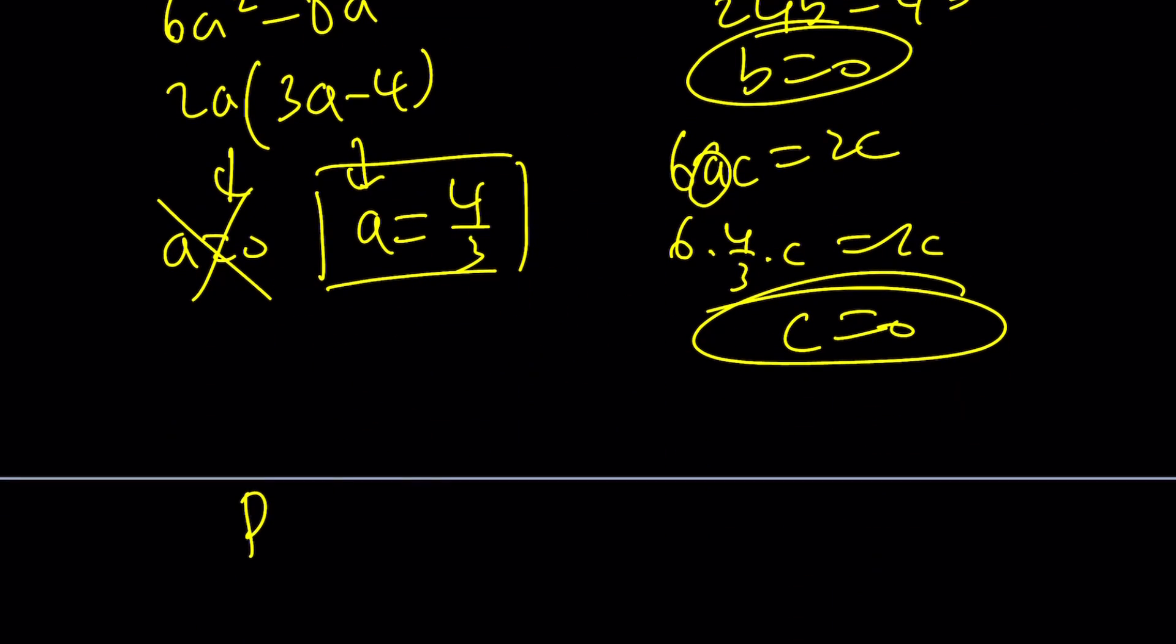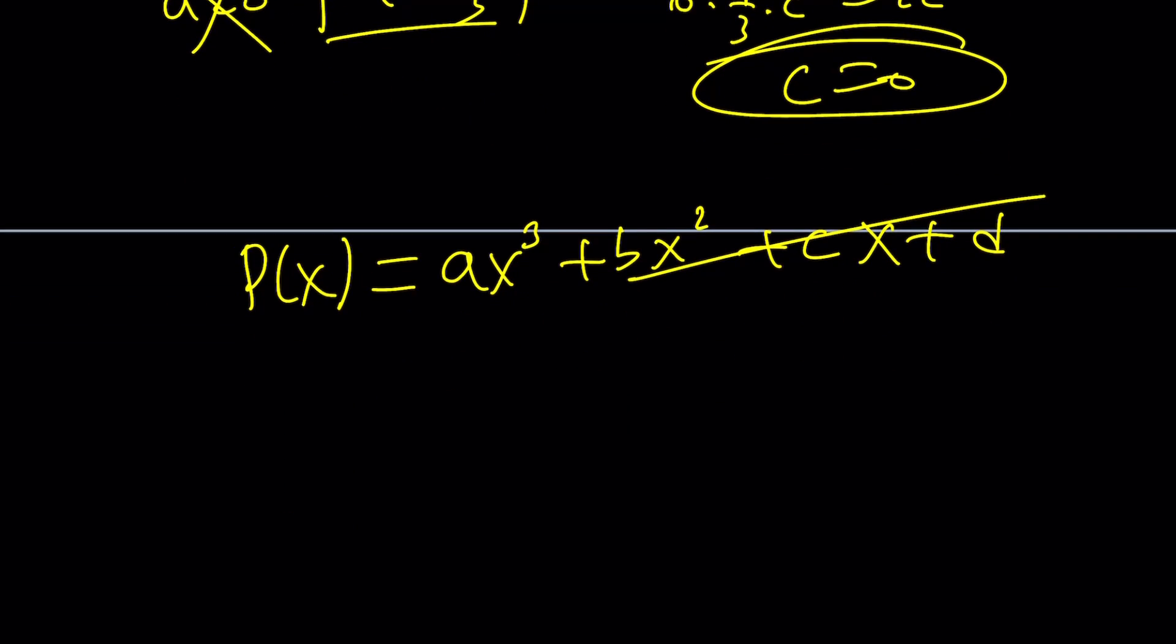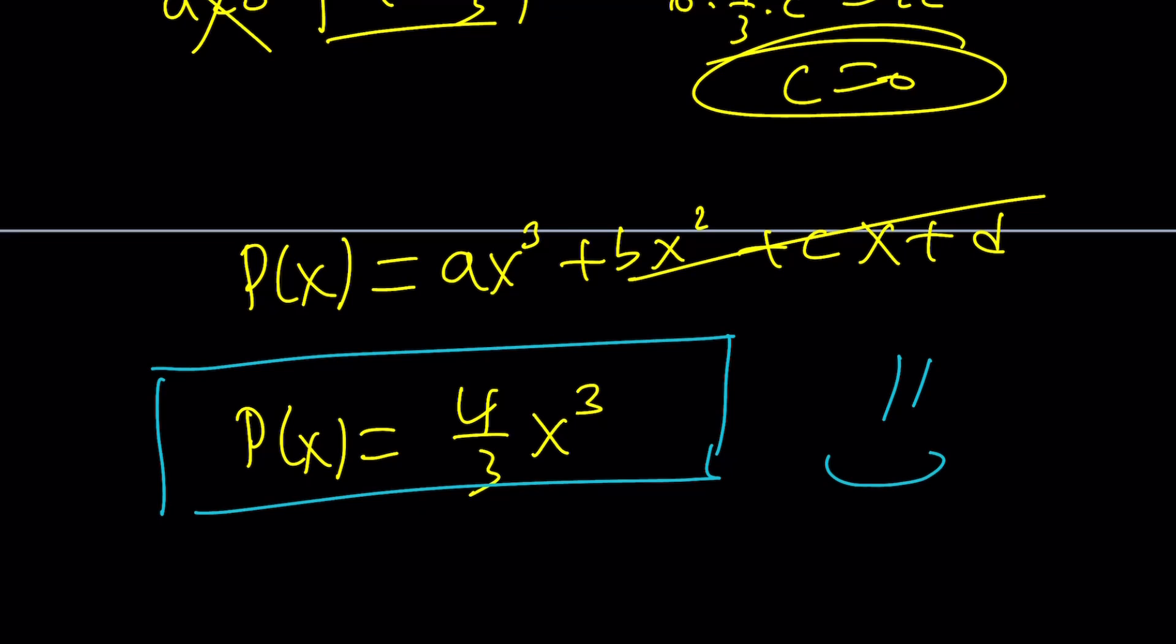Which means, yes, P is cubic, but it's just a cubic with a cubic term. And since it's ax cubed plus bx squared plus cx plus d and b, c, d are all 0, they're going to cancel out. And P of x is just going to be 4 thirds x cubed. And definitely, you can test it out. But this brings us to the end of the video. Thank you for watching. I hope you enjoyed it. Please let me know. Don't forget to comment, like, and subscribe. I'll see you next time with another video. Until then, be safe. Take care. And bye-bye.